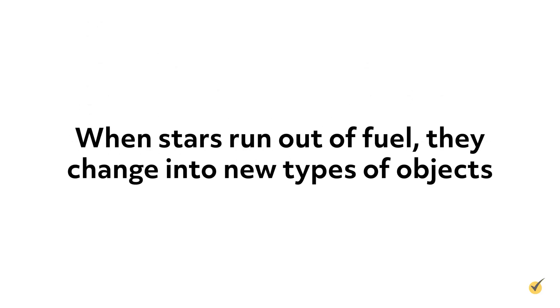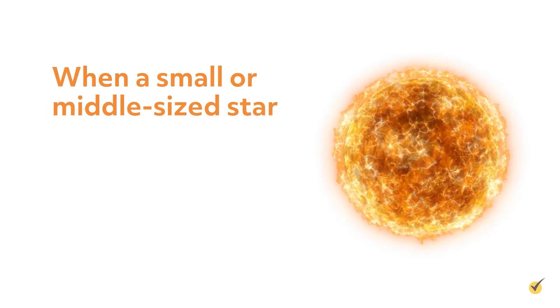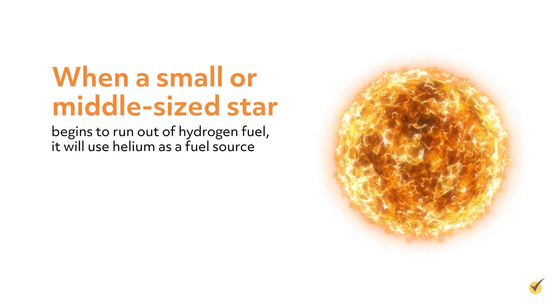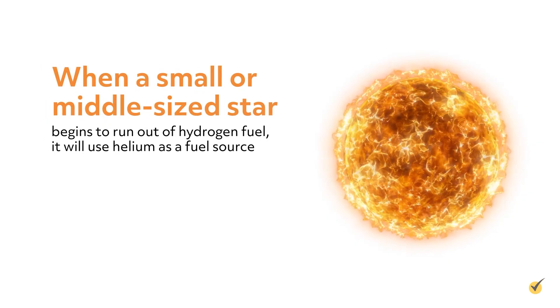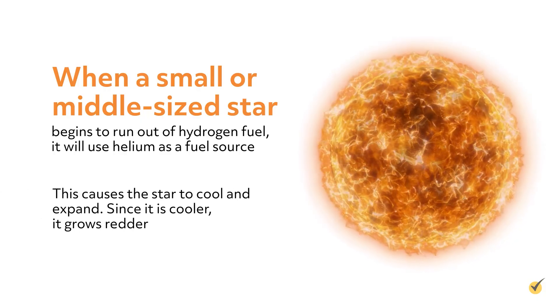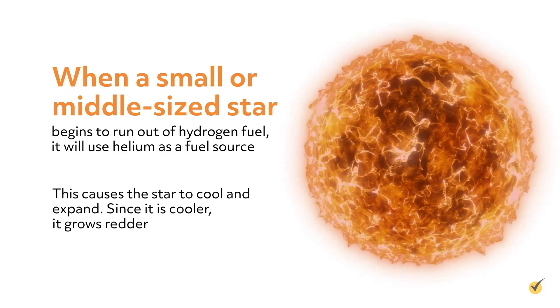When stars run out of fuel, they change into new types of objects. When a small or middle-sized star begins to run out of hydrogen fuel, it will use helium as a fuel source. This causes the star to cool and expand, and since it's cooler, it grows redder.